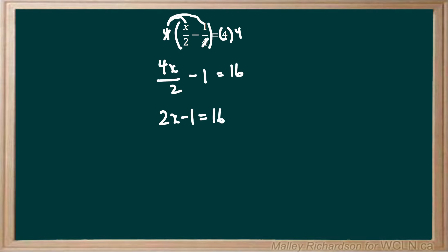Now we're left with no more fractions and we can isolate for x. So to isolate for x, we first want to add both sides by 1. And we have 2x equals 16 plus 1, which is 17.